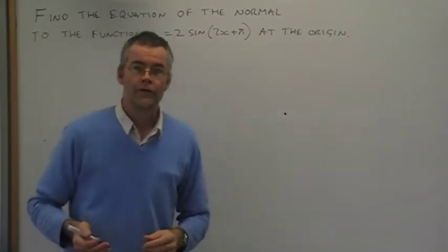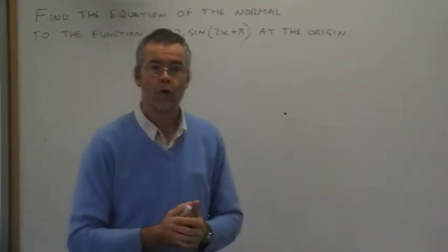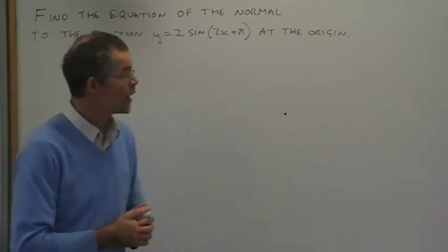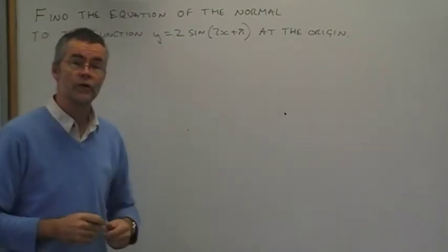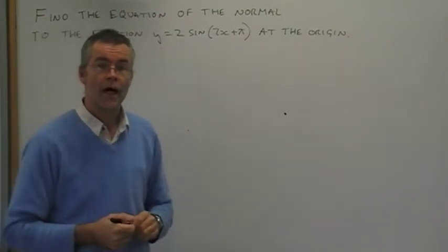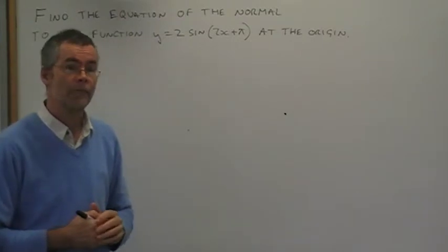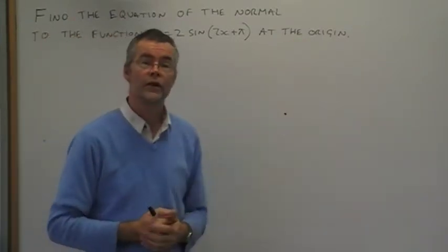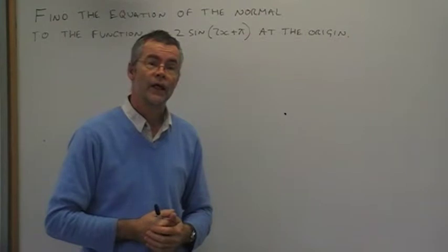Hello, I'm going to find the equation of the normal to a curve that I've made up, which is y = 2sin(2x + π), and I'm going to find the equation of the normal at the origin, the point (0,0). Here we go.